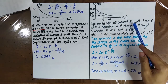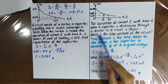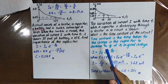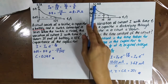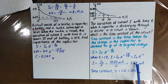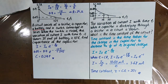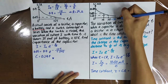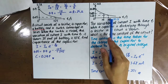The variation of current I with time T when a capacitor is discharging through a resistor is shown. What is the time constant of the circuit? After one time constant, I becomes I naught divided by e. The value of I naught is 10 microampere, so after one time constant, I becomes 3.68 microampere. From the graph, you can read off the corresponding time, which equals CR, the time constant. The time constant is equal to 20 seconds. Remember that the unit for time constant is seconds.